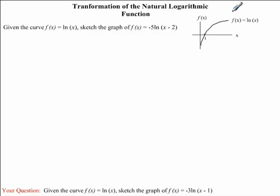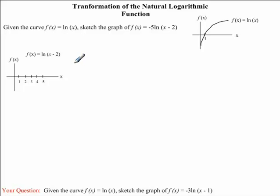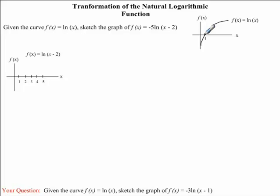Now from this graph, we're going to apply our various transformations. The first transformation we're going to take into consideration is this minus 2. So we're going to draw another graph — this will be the graph of f of x equal to ln of x minus 2. This is also a natural logarithmic function, so it will have a very similar shape to ln of x. The only difference is that the x minus 2 will cause the graph of ln x to shift 2 units to the right.